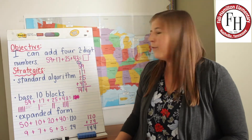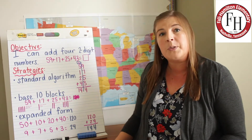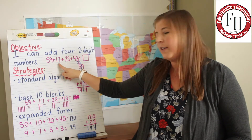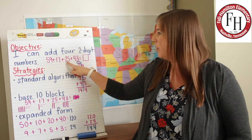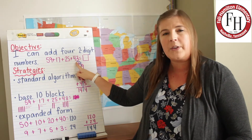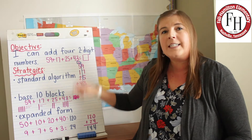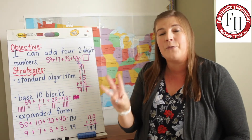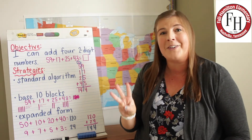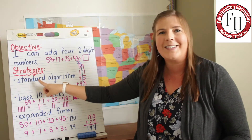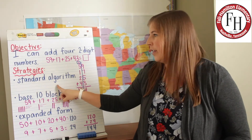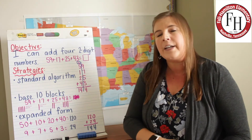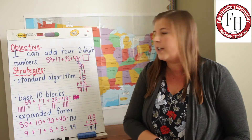An example of adding four two-digit numbers would be this problem: 59 plus 17 plus 25 plus 43. Today I'm going to show you three strategies for adding four two-digit numbers. The first one is using the standard algorithm. We've been practicing all of these strategies for adding two and three-digit numbers.